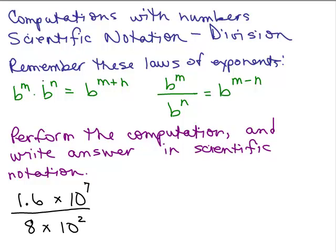We're going to have to remember these laws of exponents. b^m times b^n equals b^(m+n) and b^m over b^n equals b^(m-n).